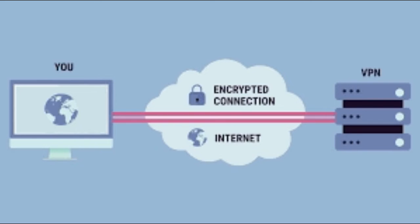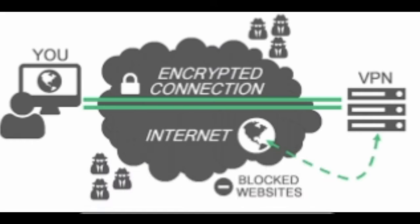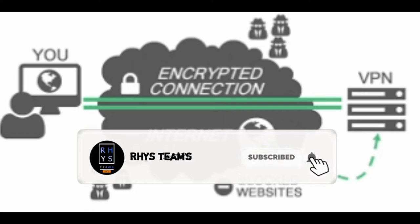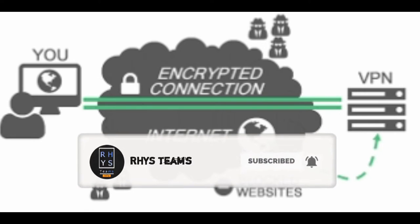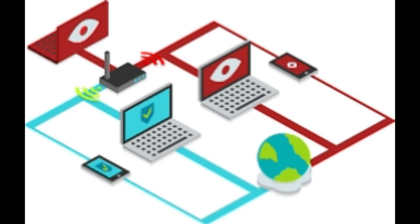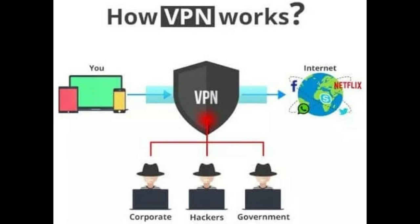How does VPN work? If you are in your country and connected to a server, it will first locate your IP address. Then you will connect to a server in another country, and your internet provider will route you through that server so you can access social media and blocked websites.